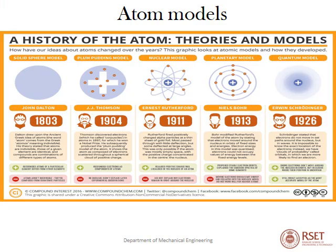If you look into the history of atom models, starting from 1803 John Dalton developed a solid sphere model, then in 1904 J.J. Thomson made a plum pudding model, a nuclear model by Rutherford in 1911, planetary model by Niels Bohr in 1913, and Erwin Schrödinger proposed the quantum model in 1926.